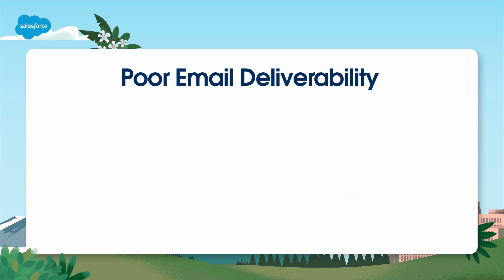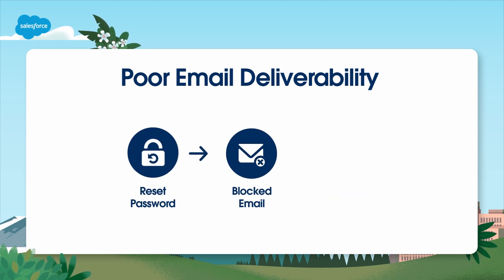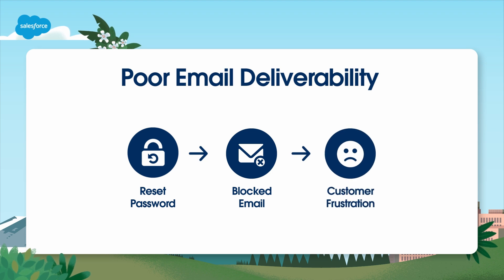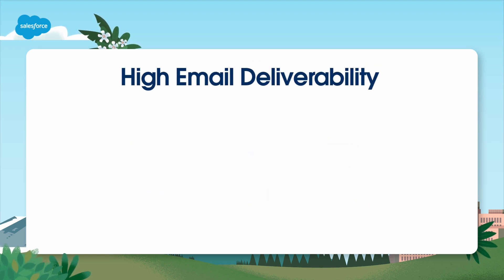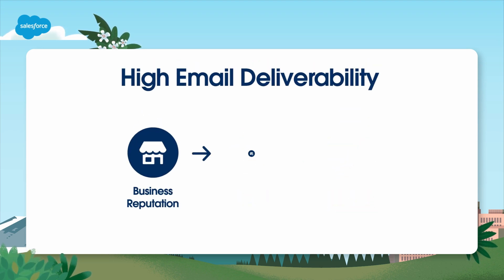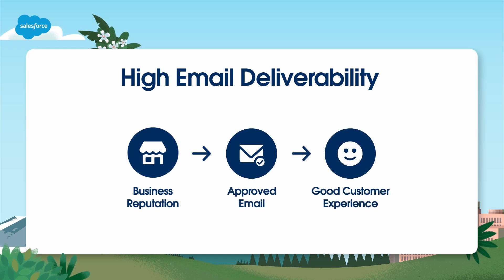For example, imagine the frustration when a customer resets their password but your reset email doesn't get through to them. High deliverability, on the other hand, is a testament to your reputation as a sender and arguably a good reflection on your business overall.